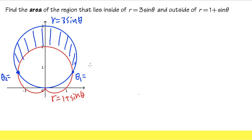To find where they intersect, set them equal: 3sin(θ) = 1 + sin(θ). Subtract sin(θ) from both sides to get 2sin(θ) = 1.